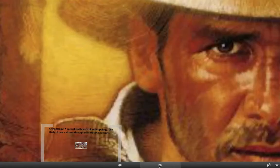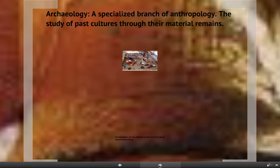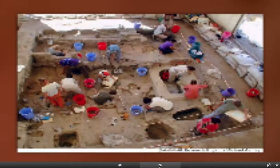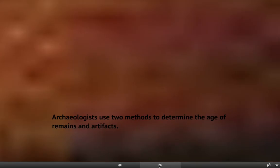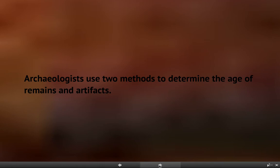Archaeology is a specialized branch of anthropology. It is the study of past cultures through their material remains. Archaeologists are the ones that dig stuff up, look at it, and study those things to try and figure out what's going on in the civilization they are looking at. Now, archaeologists have to figure out how old something is — that's one of the first things they do when they dig something out of the ground. If it's 10 years old it's probably not that important, but if it's 5,000 years old it's certainly something they want to examine more carefully.